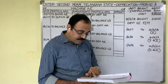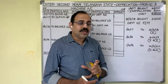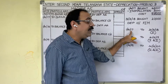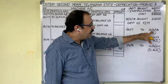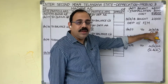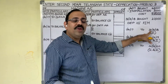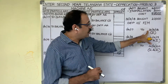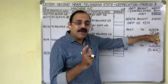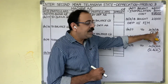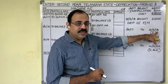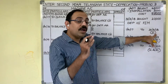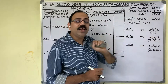We need to prepare the machinery account for 3 years. The asset was purchased on 1st April 2017; the ending date of the first year is 31st March 2018. We calculate depreciation at the end of the year, and on that date we have only one asset with a value of 45,000 rupees, so we provide depreciation on 45,000 rupees.